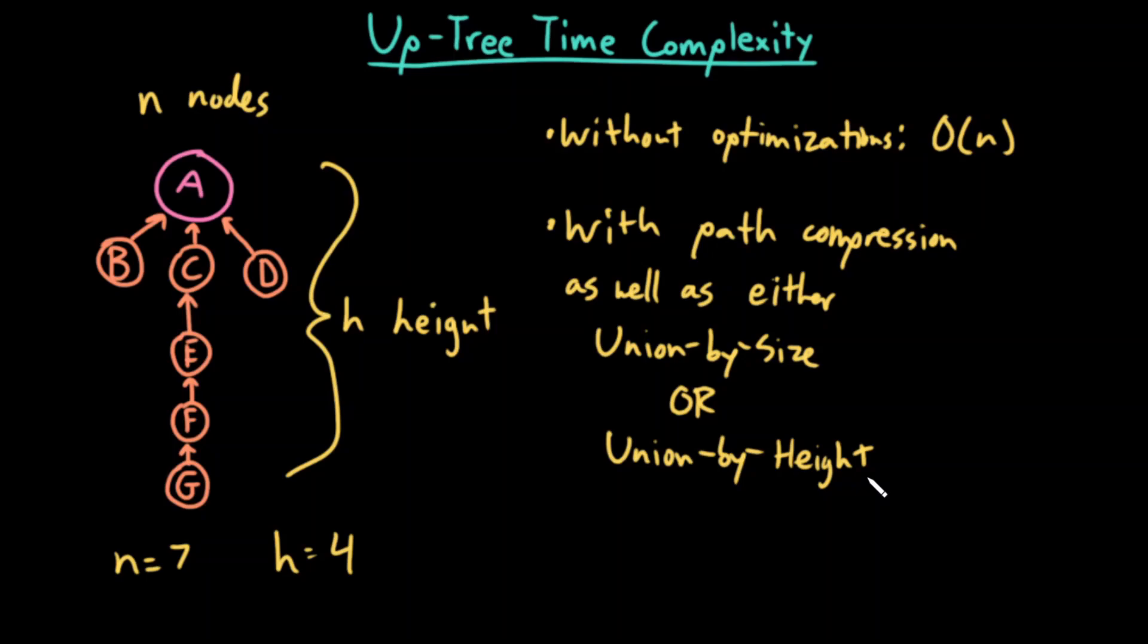So if we do path compression and we do either union by size or union by height, it turns out that the amortized worst case time complexity for a find is actually constant.